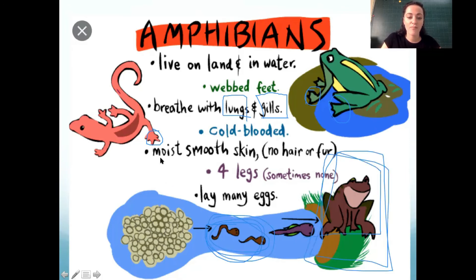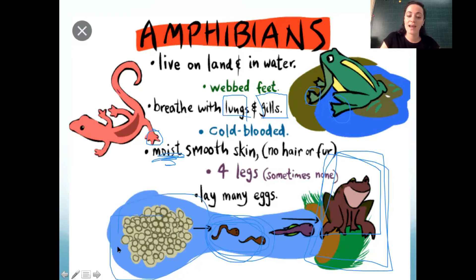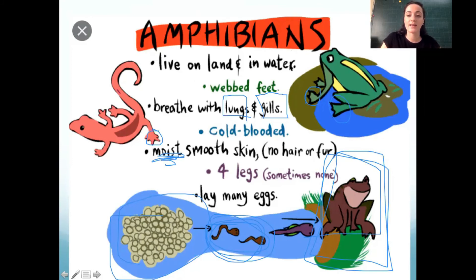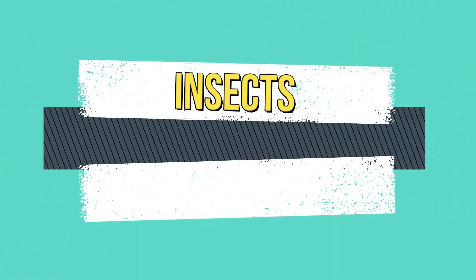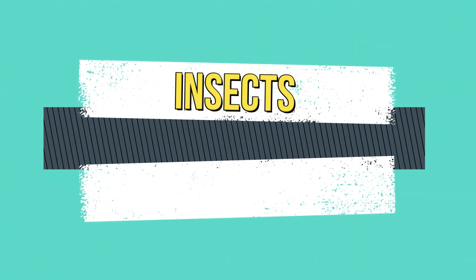Amphibians have moist — remember, that means wet — smooth skin, four legs, and lay many eggs. All right, let's take a look at the last one: insects.